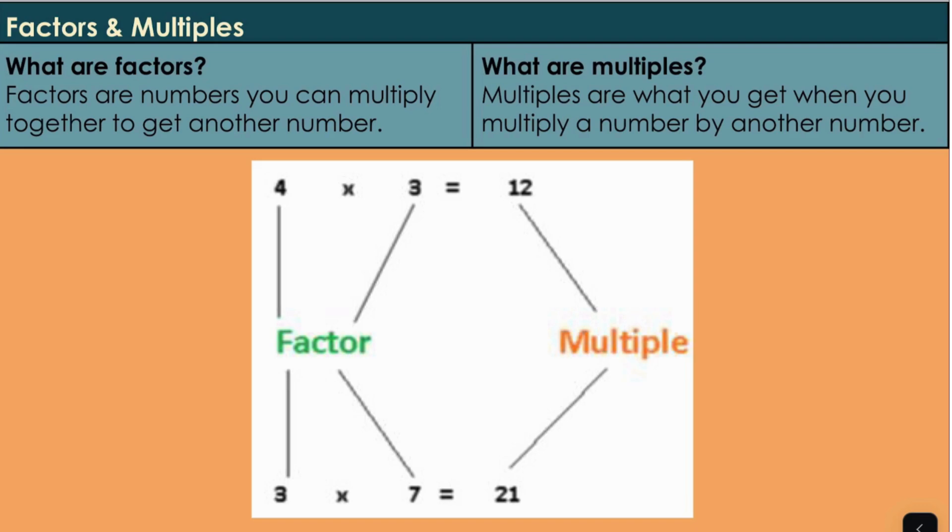Factors are numbers you can multiply together to get another number. So in this example, if we look at 4 and 3, we know that 4 multiplied by 3 is equal to 12. Now because 4 and 3 both go into 12, they are factors of 12 and 12 is the multiple.